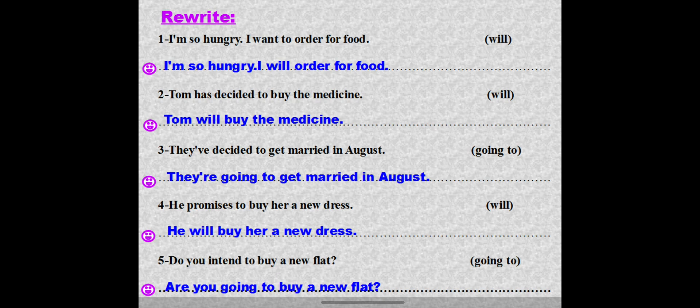Number one: 'I'm so hungry, I want to order food.' Use 'will' — it's a quick decision: 'I'm so hungry, I'll order food.' Number two: 'Tom has decided to buy the medicine.' Use 'will': 'Tom will buy the medicine.'